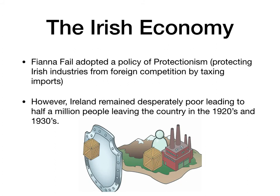Overall, the economy did not perform well under Fianna Fáil. Fianna Fáil adopted a policy of protectionism — protecting Irish industries from foreign competition by taxing imports. With the economic war, the Wall Street crash, and this policy of protectionism, there was massive unemployment in the country. Ireland was a desperately poor place, with many people having to subsist on very little money — some 40,000 within Dublin had to live off less than six pence a day. This led to about half a million people leaving the country between the 1920s and 1930s, mainly young people.